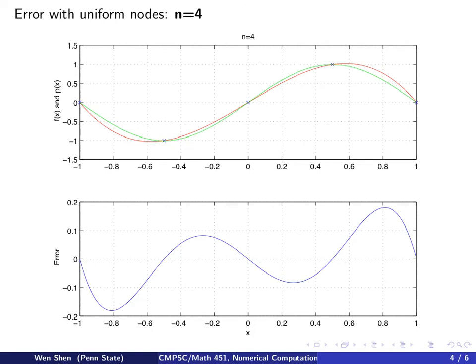So let's look at another phenomenon with a uniform grid. We set N equals 4 and approximate a cosine function on the interval negative 1 to 1 with 5 evenly distributed points. The green one is the function and the red one is the polynomial. We can plot the error — the distance between these two functions — which is plotted below. We see that in the middle the error is a bit smaller; at the interpolation points the error is 0. It peaks a bit near both boundaries.